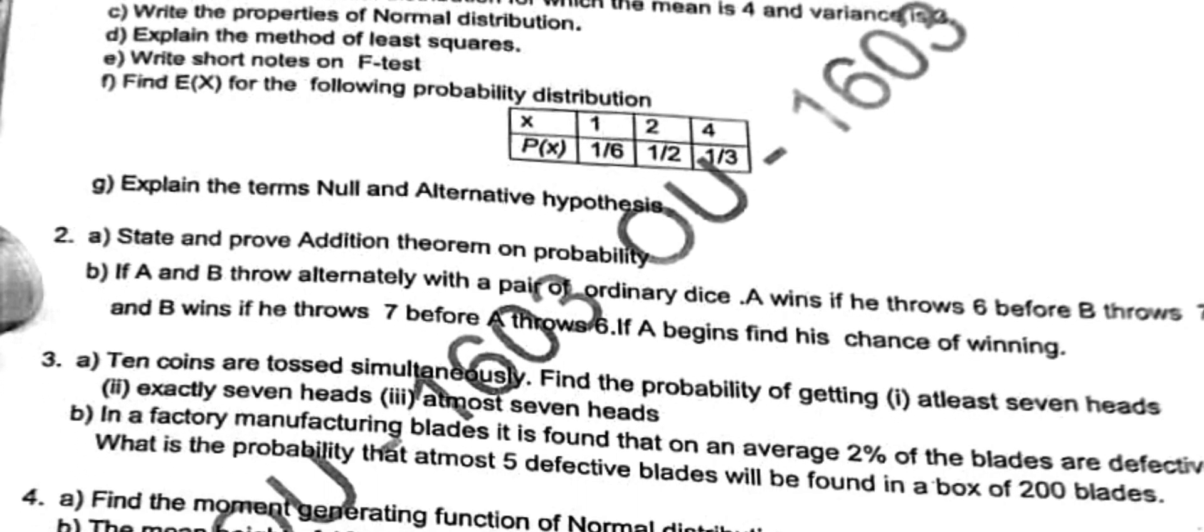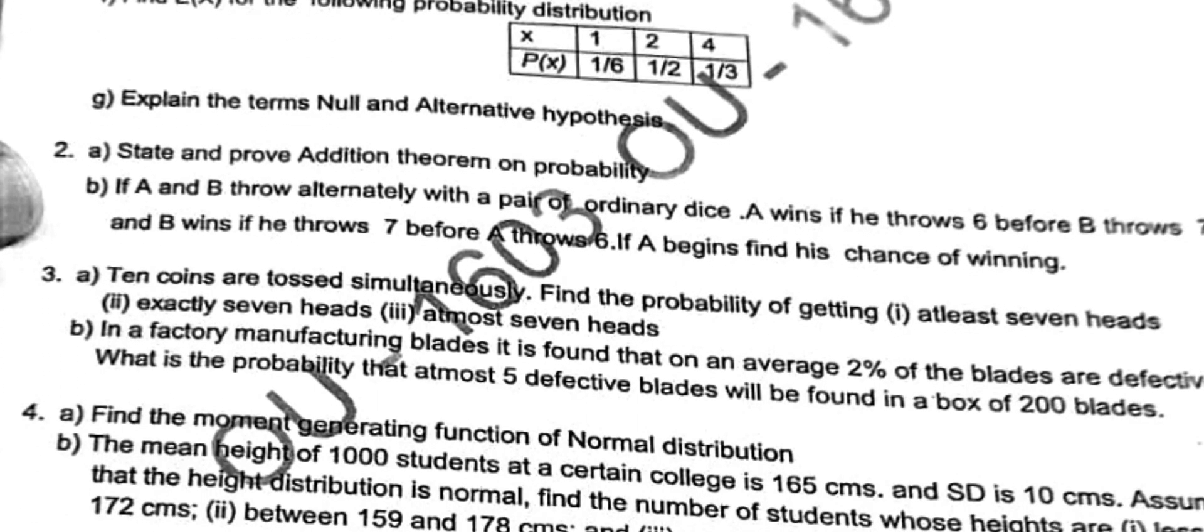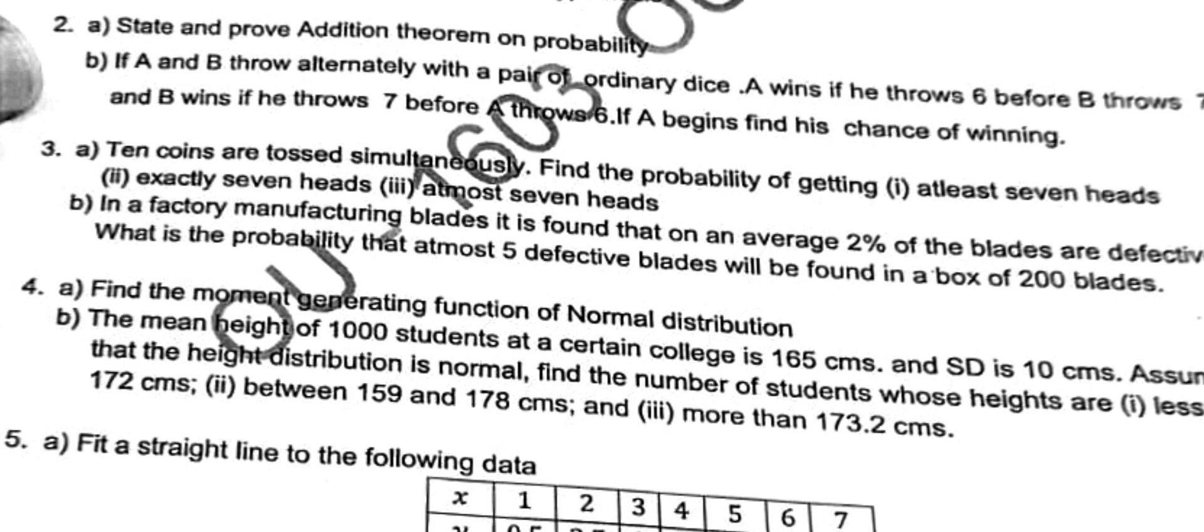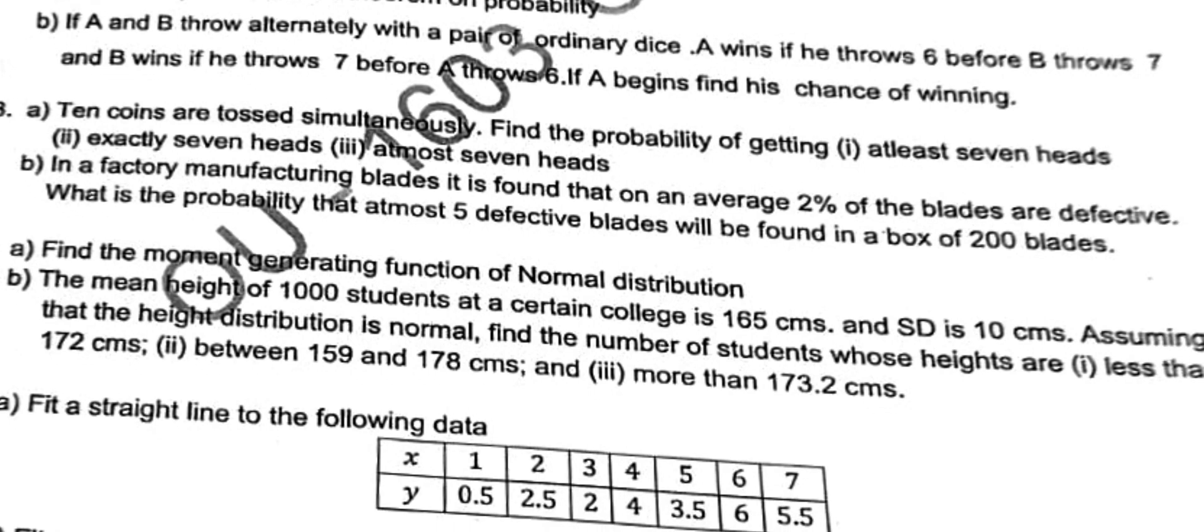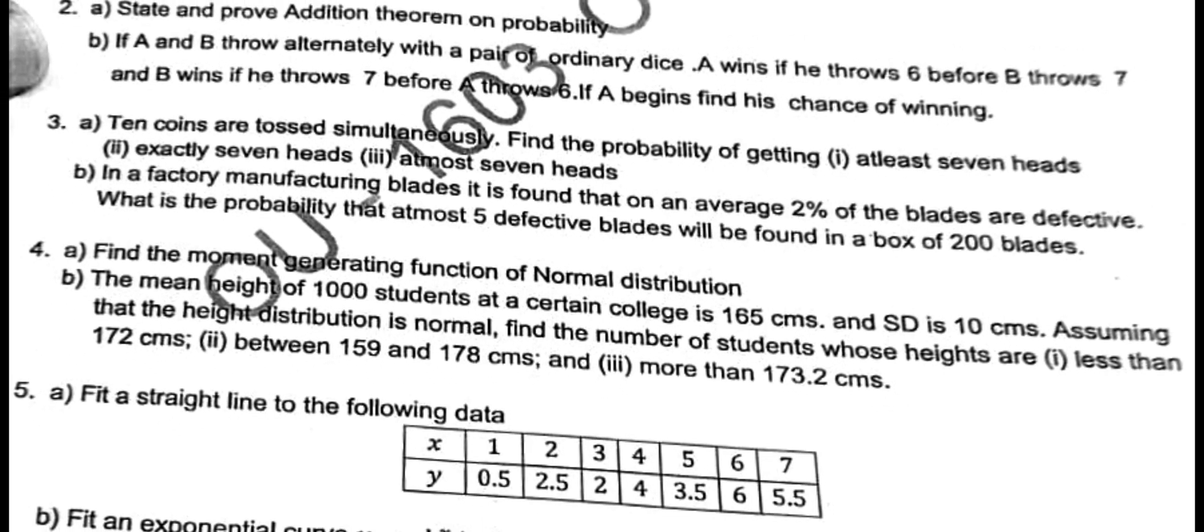Second main A question is asking addition theorem on probability - see there he asked for two marks, here he gave for seven marks. Then probability problem. Third main A is binomial distribution, at least seven heads - this also we've done. Third main B is Poisson distribution probability he gave here. You have to find lambda value, n times p. You'll get lambda is 2, lambda is 4 you get, 200 items. So we will get the value.